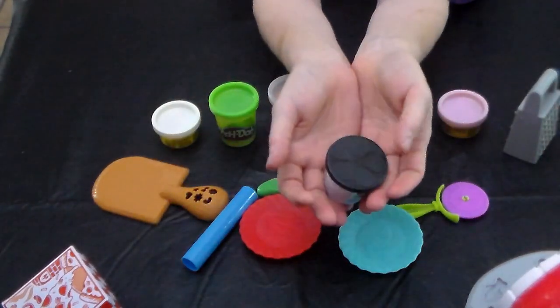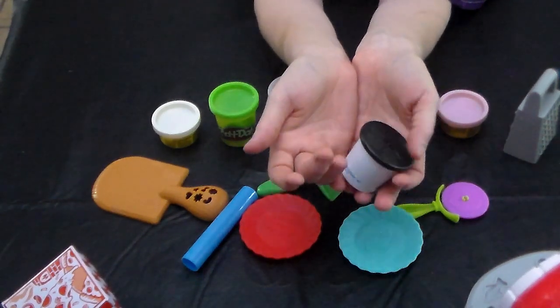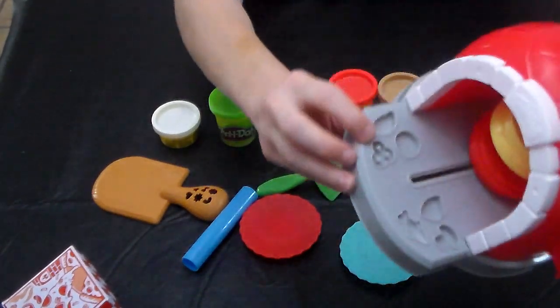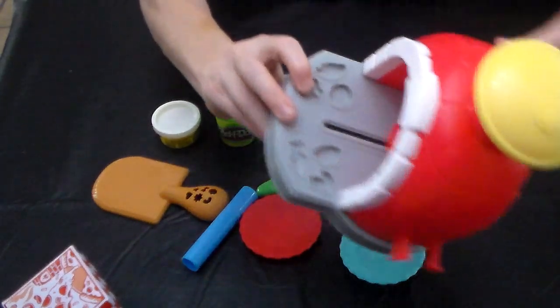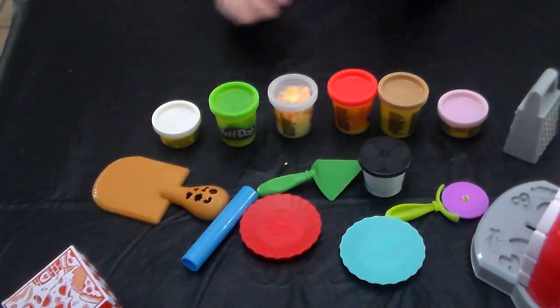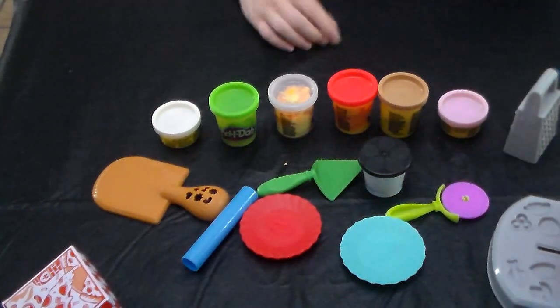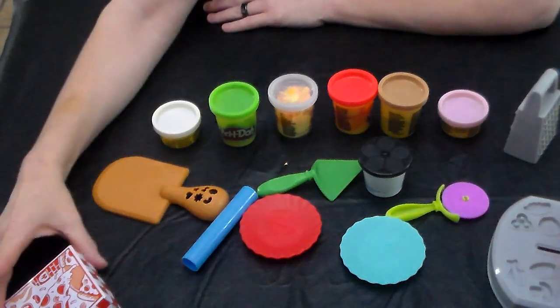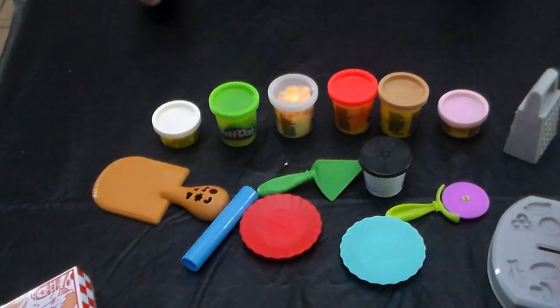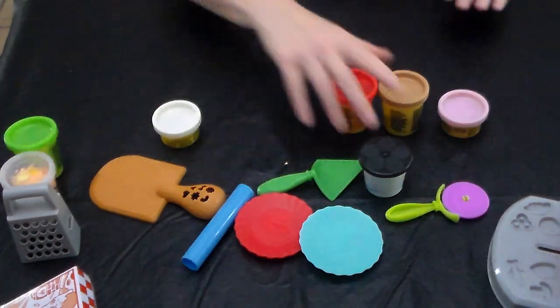By the way, this is what I wanted the black Play-Doh for that I had been talking about in my previous videos, because it took me forever to figure out what this was. This right here is black olives and I had no idea. The first time I saw it I thought it was bell pepper, but no, the bell pepper is right there. So that was embarrassing, but that's why I wanted this black Play-Doh.